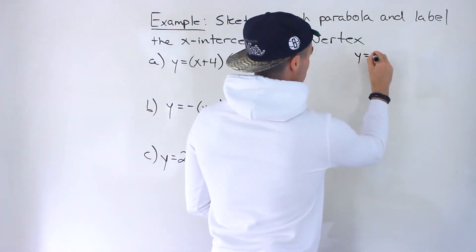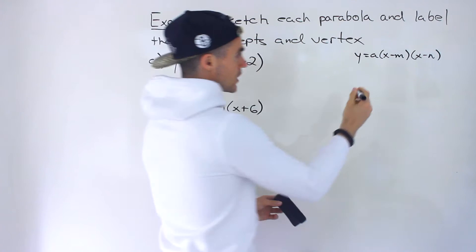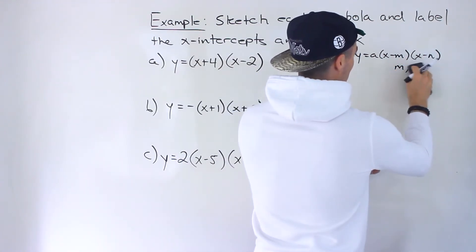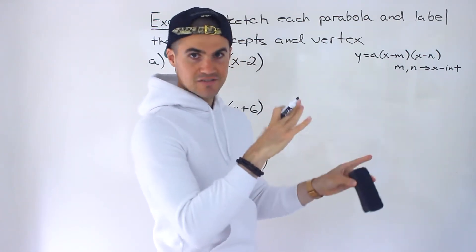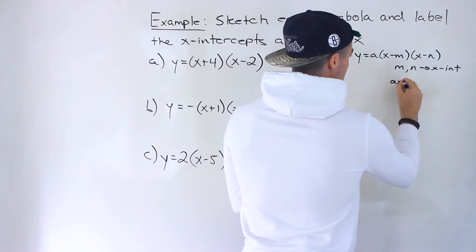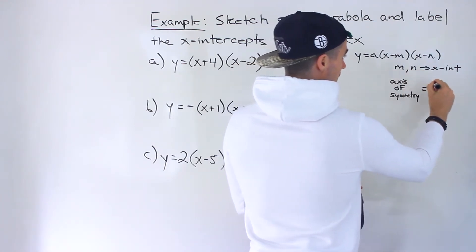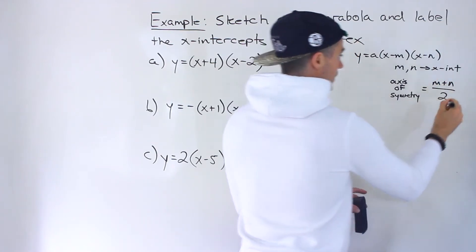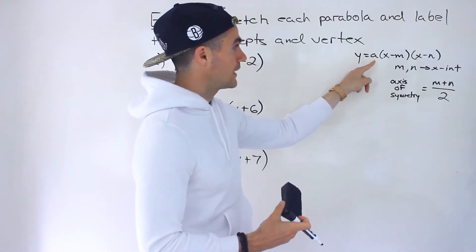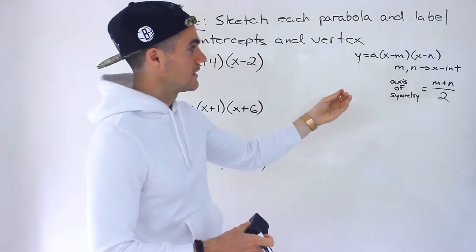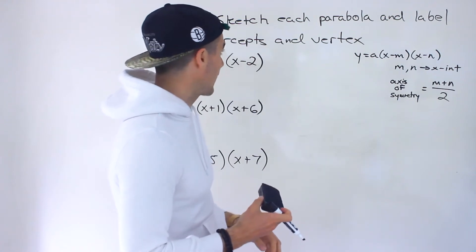As a quick review, remember in the overview video we mentioned the general factored form of a quadratic where m and n are going to be the x-intercepts. The midpoint between the x-intercepts is going to be the x-value of the vertex, or the axis of symmetry. So the axis of symmetry is the midpoint between m and n — we just add them and divide by 2. Once we have that x-value, we plug it into the function to get the corresponding y-value of the vertex. With the vertex coordinates and the x-intercepts, that's enough to draw a fairly accurate graph.